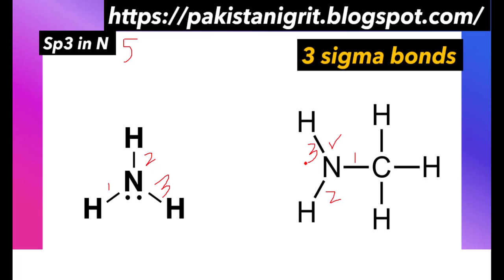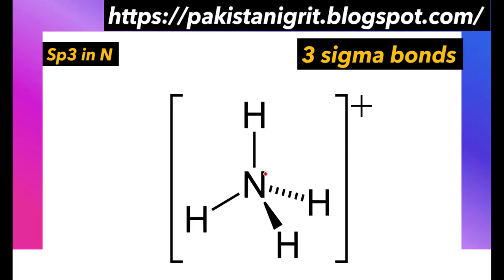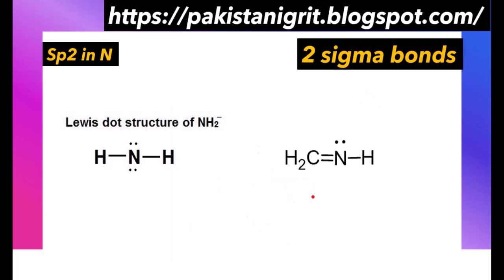In another nitrogen example, we also observe three sigma bonds — sp3 hybridization. In the case of a nitrogen with four sigma bonds, the hybridization remains sp3 because one of those bonds is formed by donation of a lone pair from nitrogen to hydrogen, indicated by the positive charge. The other bonds are regular sigma bonds. So this is an exceptional case — nitrogen has sp3 hybridization with three sigma bonds, and also retains sp3 when it donates a lone pair to form a fourth bond.